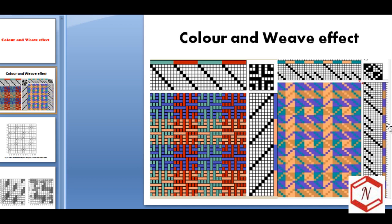At least three important parameters are required: namely the order of warping, the order of wefting, and the design. The order of coloring can be simple warping and simple wefting, simple warping and compound wefting, simple wefting and compound warping, or compound warping and compound wefting.